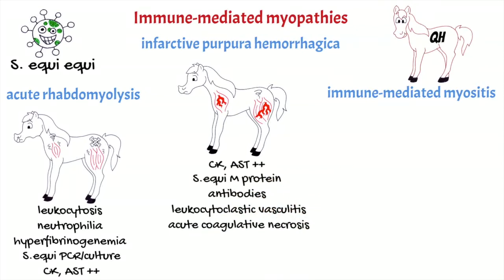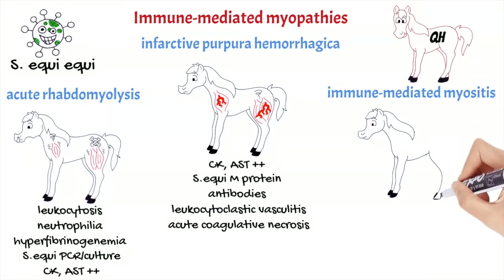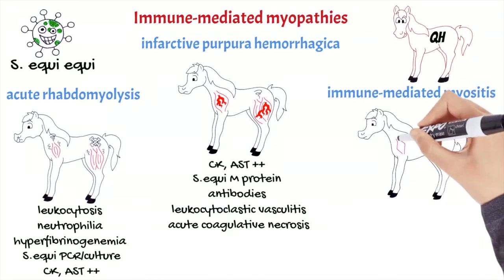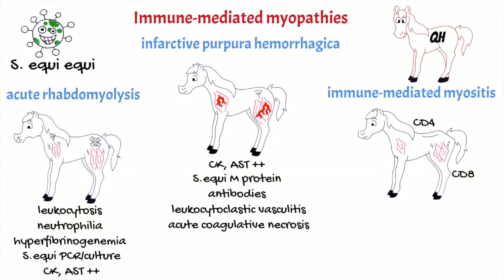Immune-mediated myositis is characterized by the rapid development of muscular atrophy, especially of the epaxial and gluteal muscles. Muscle fibers are destroyed by reactions mediated by CD4 and CD8 lymphocytes. Loss of self-tolerance mechanism is due to molecular mimicry, where epitopes of an infectious agent are highly similar to self-peptides, release of superantigens by Streptococcus equi, or high concentration of cytokines, which all contribute to proteolysis and muscle catabolism.